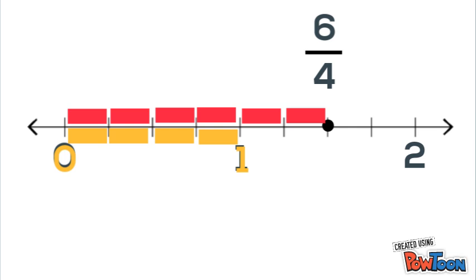Any time that our dot is past 1, our numerator will be bigger than the denominator. And vice versa, if we know our numerator is bigger than the denominator, then we know the fraction is greater than 1.